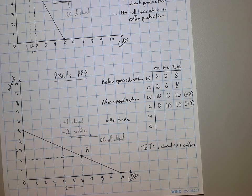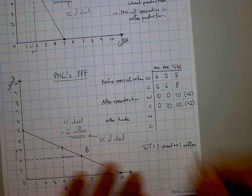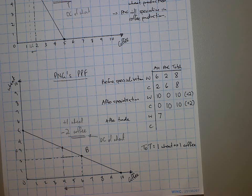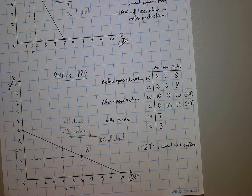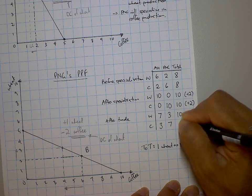If Australia keeps 7 units of wheat and sells 3 units to PNG, at a one-to-one exchange rate Australia receives 3 units of coffee. PNG sells 3 units of coffee and receives 3 units of wheat, and PNG still has 7 units of coffee. Adding up the numbers: 10 wheat and 10 coffee total — consistent.